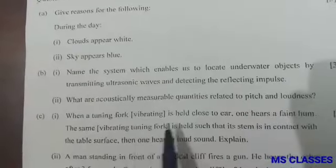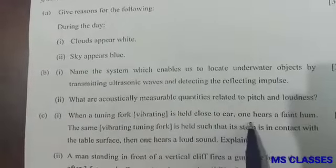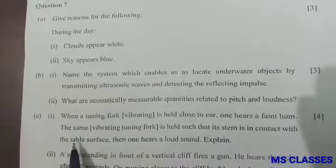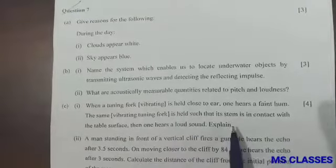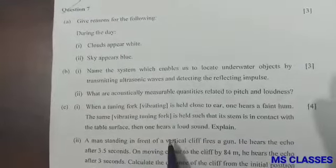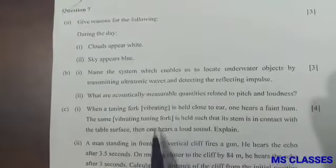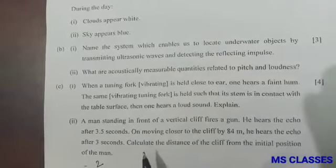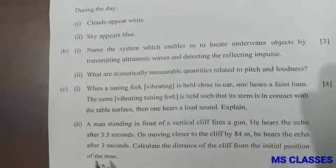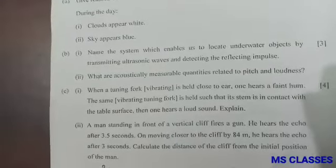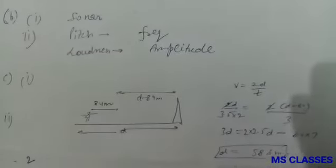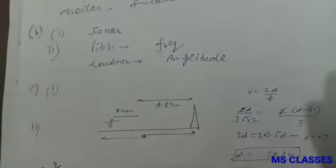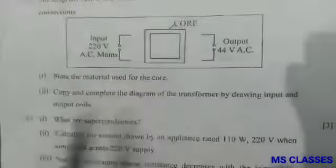Part (c): First, when a tuning fork is held closer to the ear, one hears a faint hum. The same vibrating tuning fork is held such that its stem is in contact with the table surface, then one hears a loud sound. Explain. Because of increasing the surface area, one hears the loud sound. Second, a man standing in front of vertical cliff fires a gun. He hears the echo after 3.5 seconds. On moving closer to the cliff by 84 meters, he hears the echo after 3 seconds. Calculate the distance of the cliff from the initial position. From here, the distance is 588 meters.